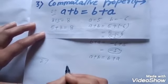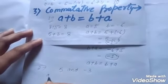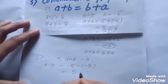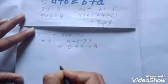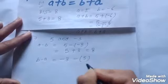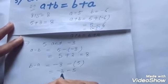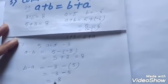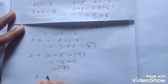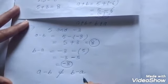Consider integers five and minus three. Find a minus b: five minus minus three — minus minus is plus — so five plus three is eight. Now find b minus a: minus three minus five — minus minus is plus — five plus three is eight, but the greater number five has a negative sign, so the answer is minus eight. Eight and minus eight are not equal, so a minus b is not equal to b minus a. We conclude that subtraction is not commutative for integers.